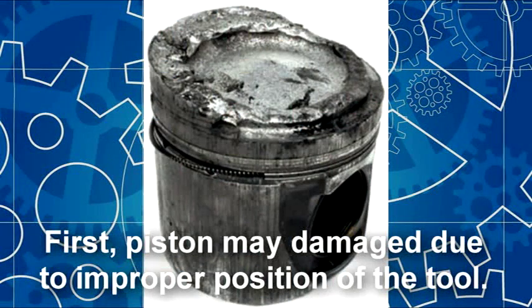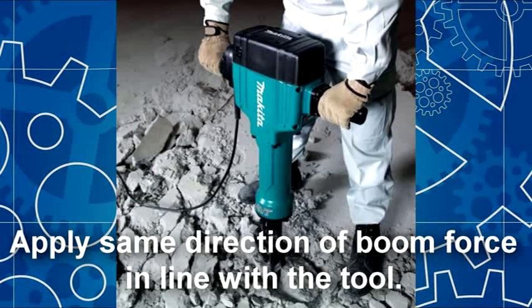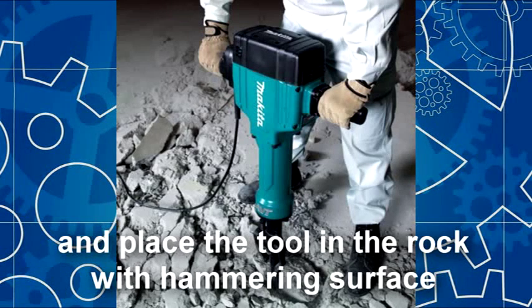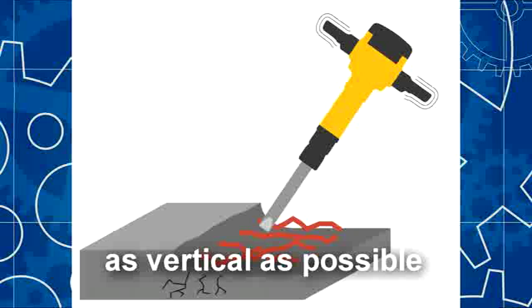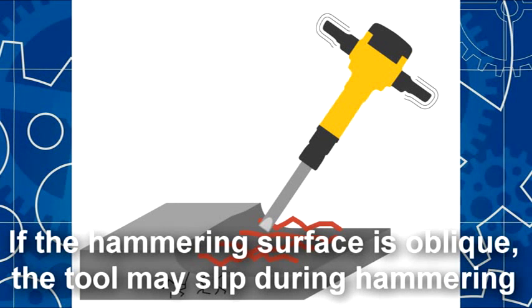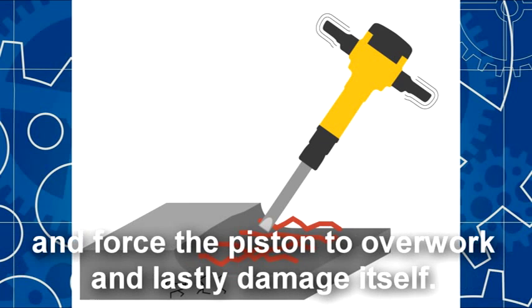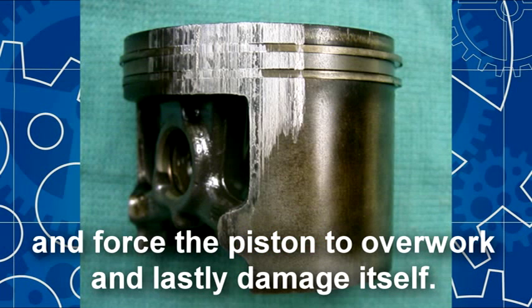First, the piston may damage due to improper position of the tool. Apply the same direction of boom force in line with the tool and replace the tool in the rock with the hammering surface as vertical as possible. If the hammering surface is oblique, the tool may slip during hammering and force the piston to overwork and lastly damage itself.